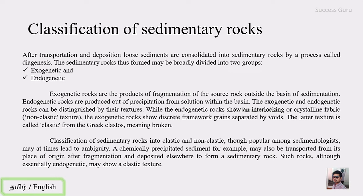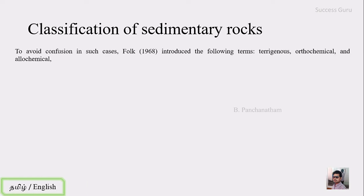The classification of sedimentary rocks into clastic and non-clastic, though popular among sedimentologists, may at times lead to ambiguity. The problem is that chemical precipitate sediments may also be transported from their place of origin and, after fragmentation and redeposition, form a sedimentary rock. Such a rock, although essentially endogenetic, may show clastic texture. So the ambiguity is: if a precipitated rock is weathered, transported, and redeposited, what should it be called?